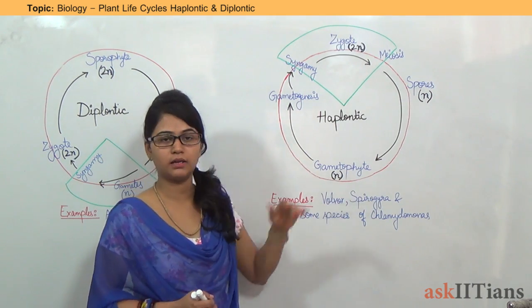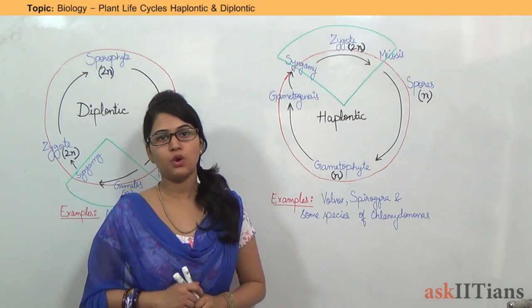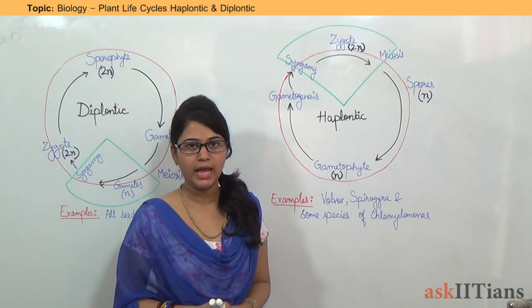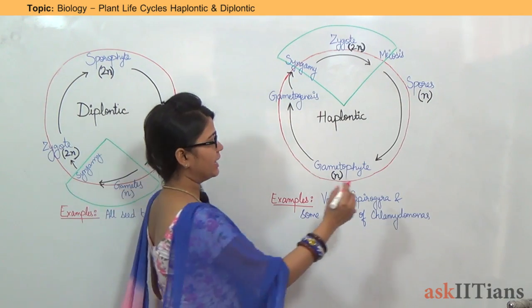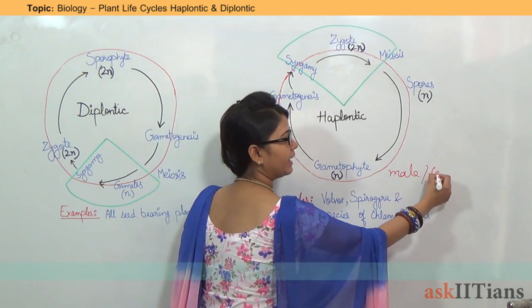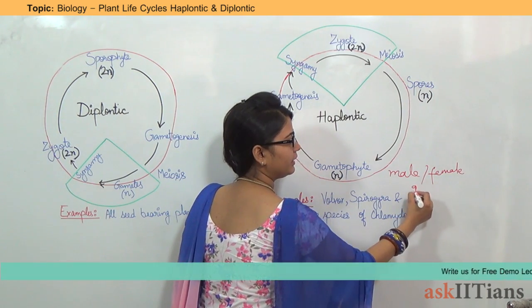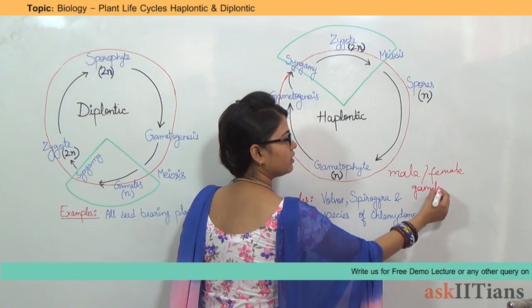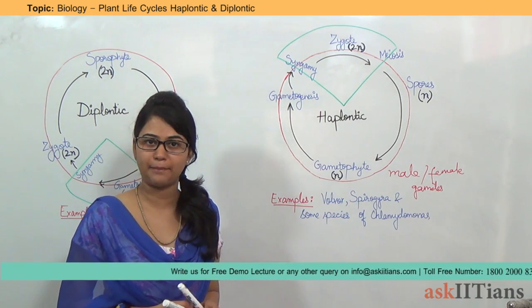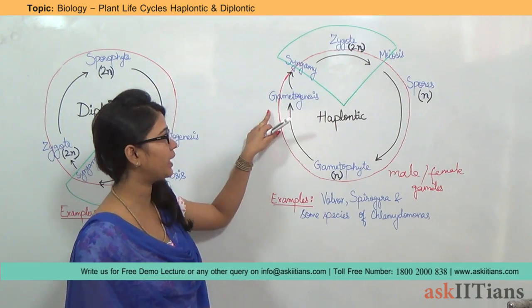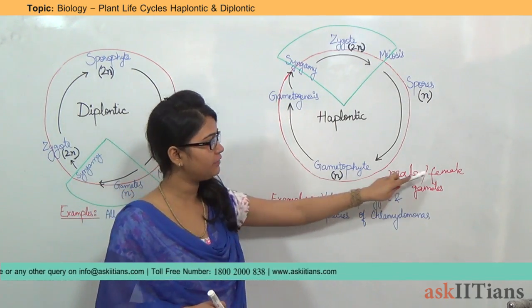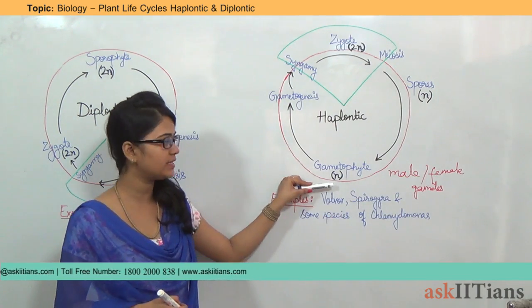Gametophyte is the main plant vegetative body and it is always haploid. It produces male and female gametes. The process by which male and female gametes are produced is known as gametogenesis, and these male and female gametes are always haploid.